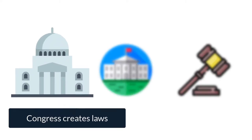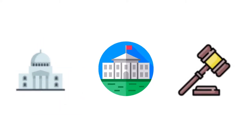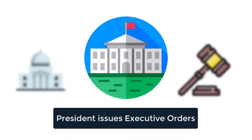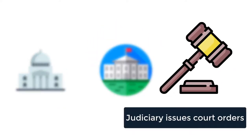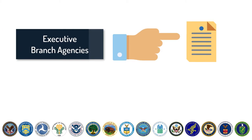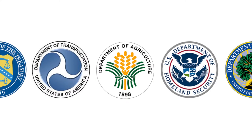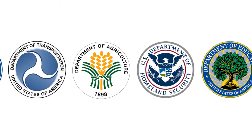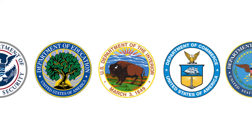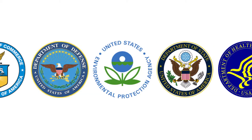Congress creates laws, the president issues executive orders, and the judiciary issues court orders. Each of these can cause executive branch agencies to create or modify rules and regulations. Examples of agencies include the Department of Agriculture, the Department of Interior, or the Environmental Protection Agency.